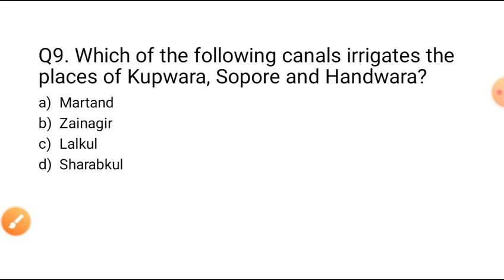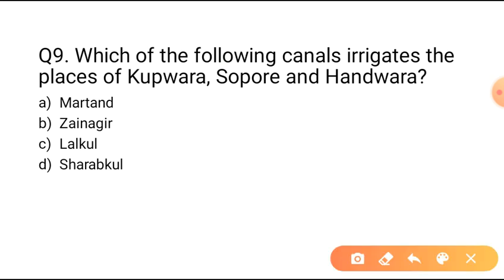Question nine: Which of the following canals irrigates the places of Kupwara, Sopore and Handwara? Option C is the correct answer.